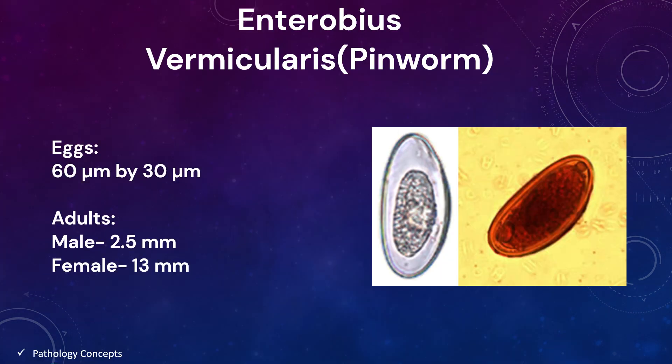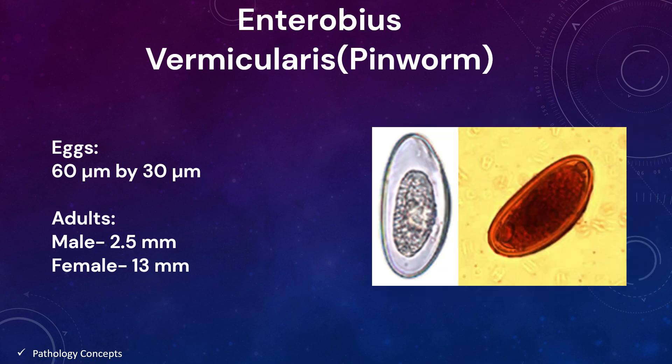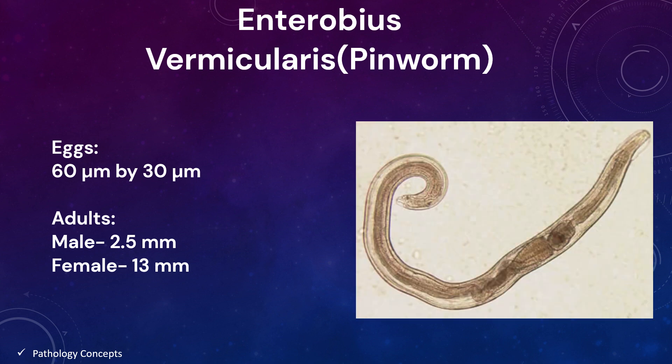The eggs of Enterobius vermicularis measure around 60 microns by 30 microns. They are transparent, elongated to oval in shape, and slightly flattened on one side. Microscopic identification of eggs collected from the perianal area is the method of choice for diagnosing enterobiasis. It is done by applying cellulose tape to the anus of the suspected patient, especially in the morning before the patient's first bowel movement. Eggs adhere to the tape and can be seen microscopically.